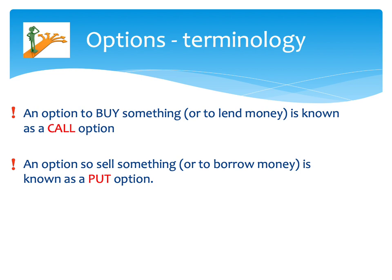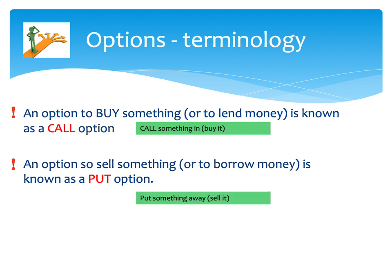There's not much new terminology to learn for options. An option to buy something — or an option to lend money, such as buying debentures — is called a call option. Think of it as calling something in; you're buying it, bringing it to you. An option to sell something — or an option to borrow money, like selling debentures — is called a put option. You're putting something away from you, giving it away. It's really important you remember that terminology.